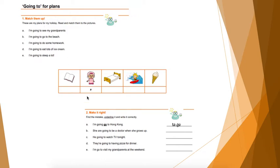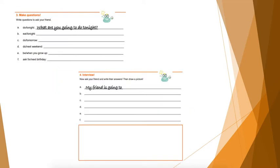For the next exercise, we need to make questions using the given phrases. For example, using 'do' and 'tonight,' we need to create questions to ask your friends, like: 'What are you going to do tonight?' For the last part, number four, it's a little trivia.